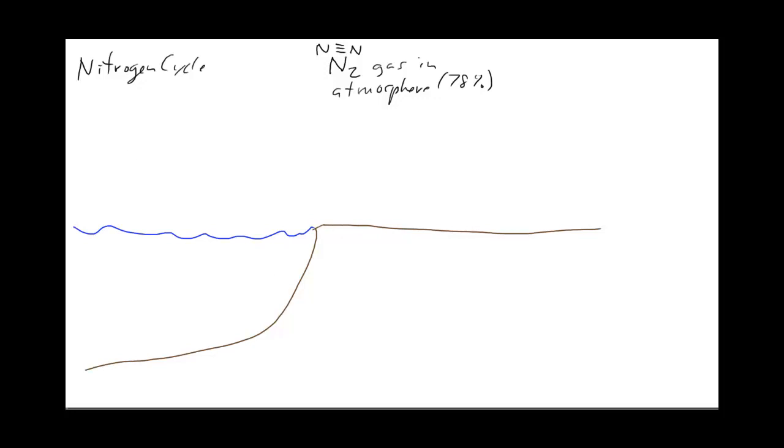The first step of this cycle is called nitrogen fixation. In nitrogen fixation, we have N2 going to NH3, which is also called ammonia. You had a chance to smell ammonia the other day in class.